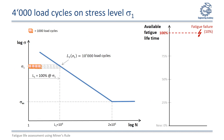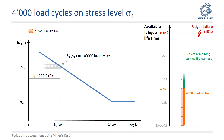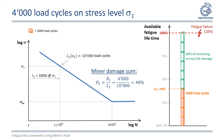Let us consider the damage accumulation at stress level sigma1. The service life L1 is 10,000 load cycles. The 4,000 load cycles cause 40% of the available lifetime damage to be used up, meaning 60% of the possible service life damage remains for upcoming load levels. The minor damage sum D1 calculates as N1 equals 4,000 load cycles divided by L1 equals 10,000 load cycles, resulting in 40%.